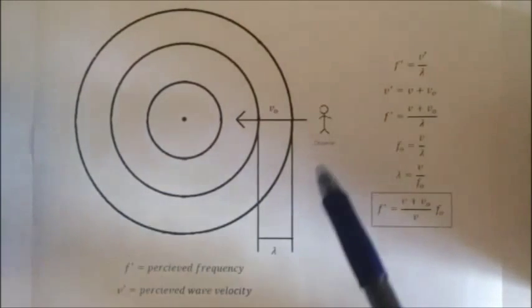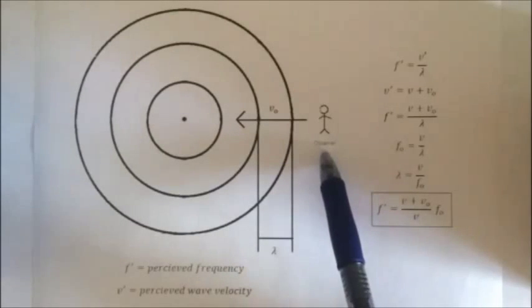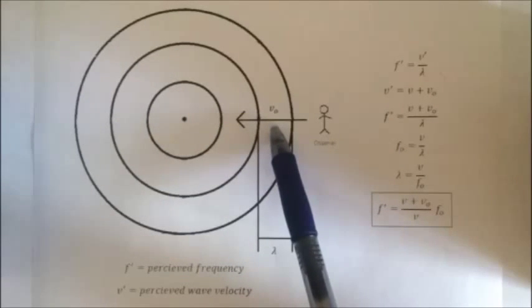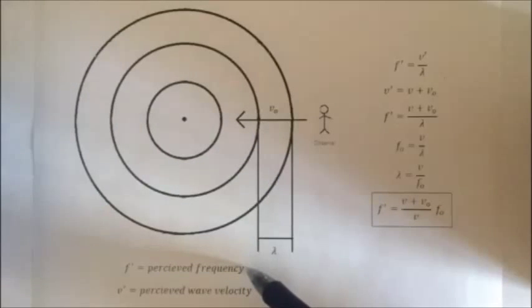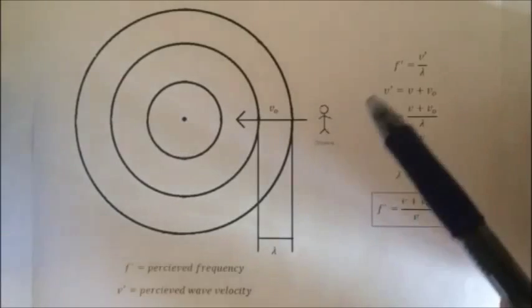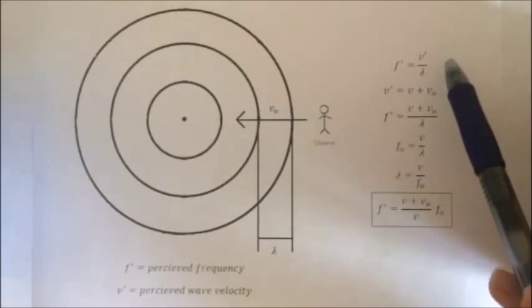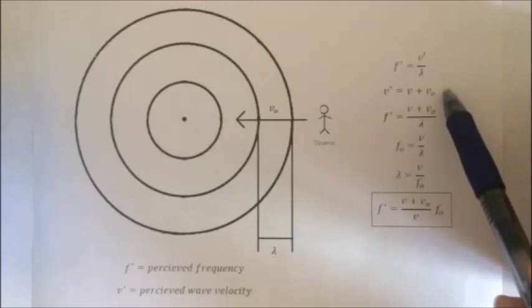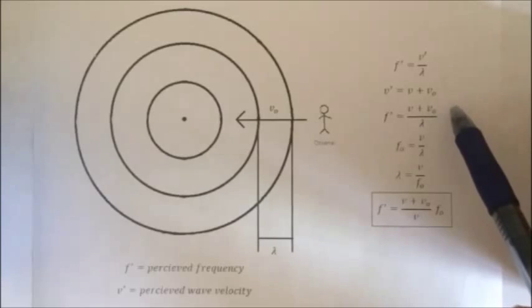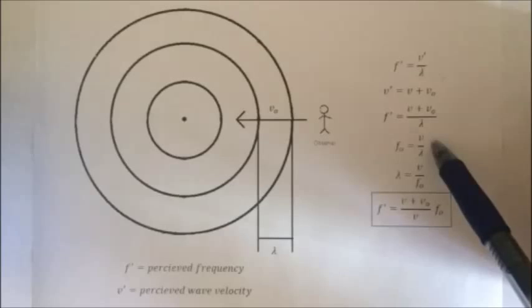The second situation is when there is a moving observer, moving at a speed V0, which is positive when moving towards the source and negative when moving away. There is still a perceived frequency, f prime, but instead of a different wavelength, the velocity of the wave is perceived differently, represented by V prime. In a similar way as before, we can solve for the perceived frequency, if the perceived wave velocity is equal to the original plus the velocity of the observer. That can be used to substitute into the equation for frequency, as well as the equation for the original wavelength, to give us the following.